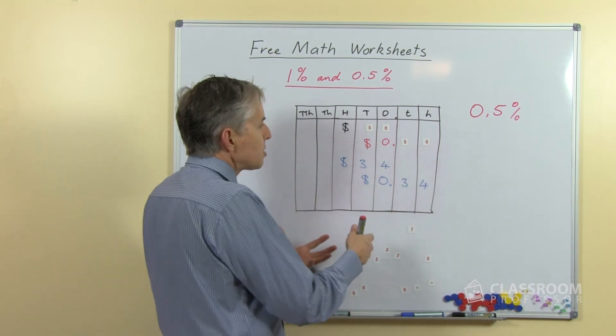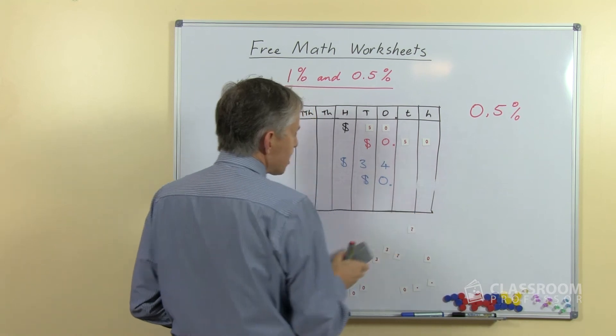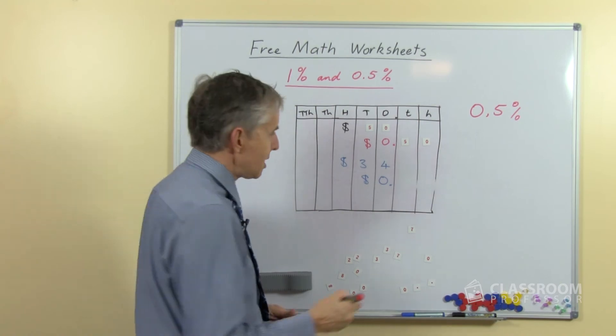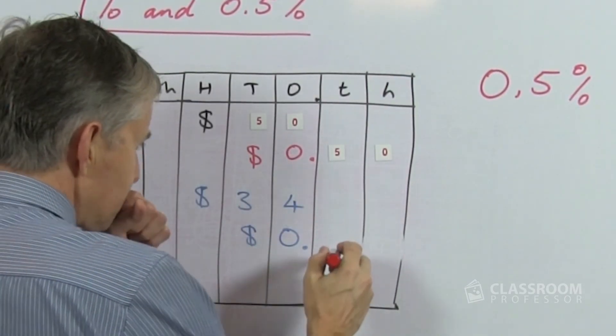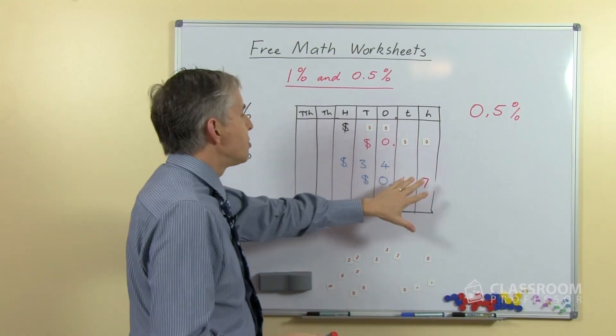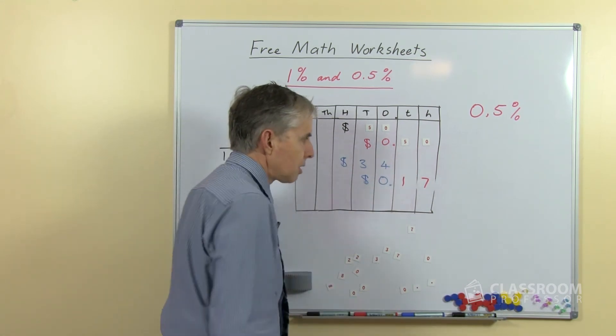Of course more advanced students will be able to do this mentally. So for example with our example of thirty-four and converting that or rather multiplying it by half a percent, a good student will see that half of thirty-four is seventeen and one percent. Well, one percent of thirty-four is thirty-four cents, half of that is seventeen cents. And so that's the result.